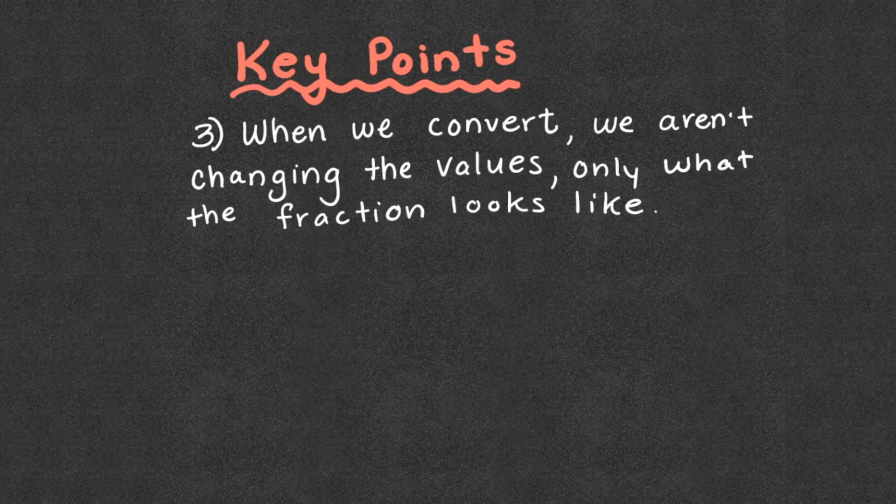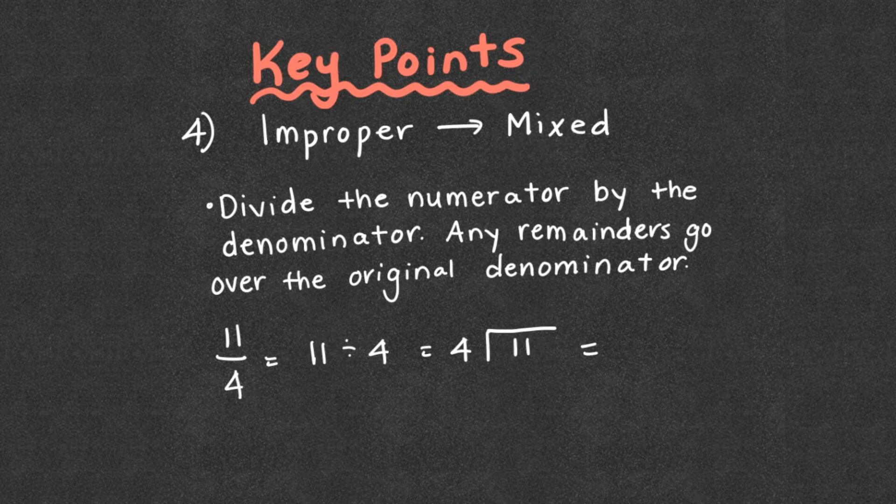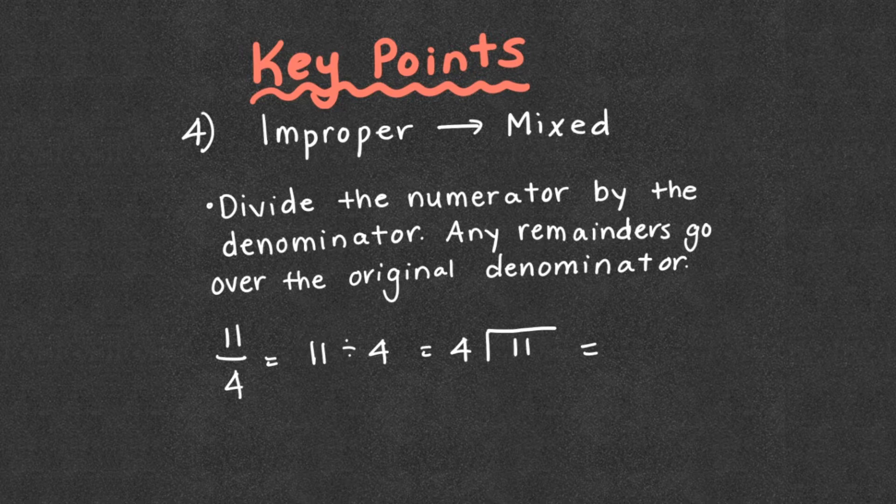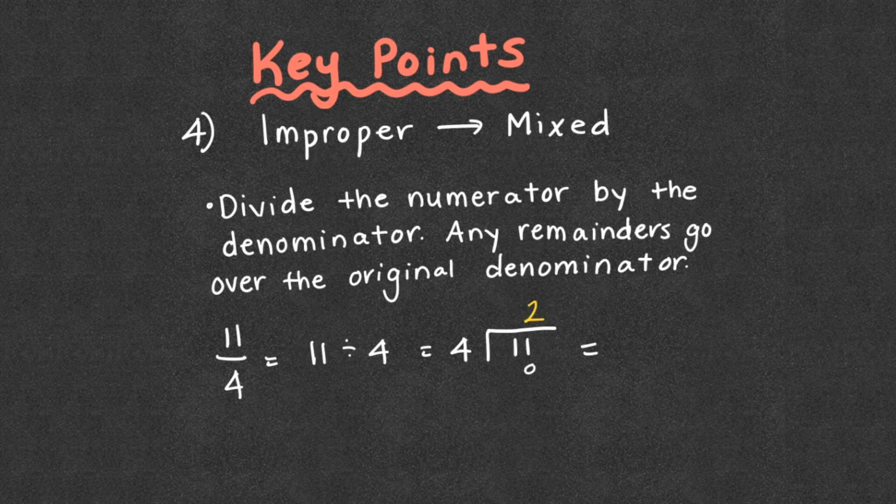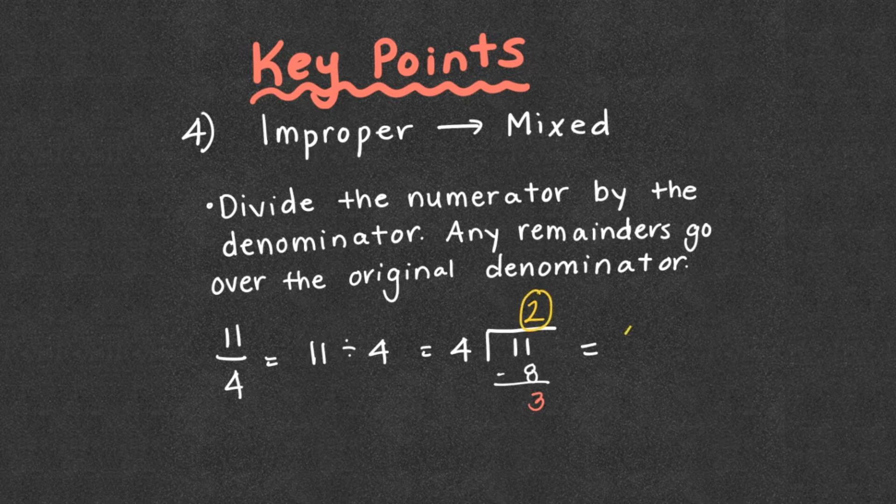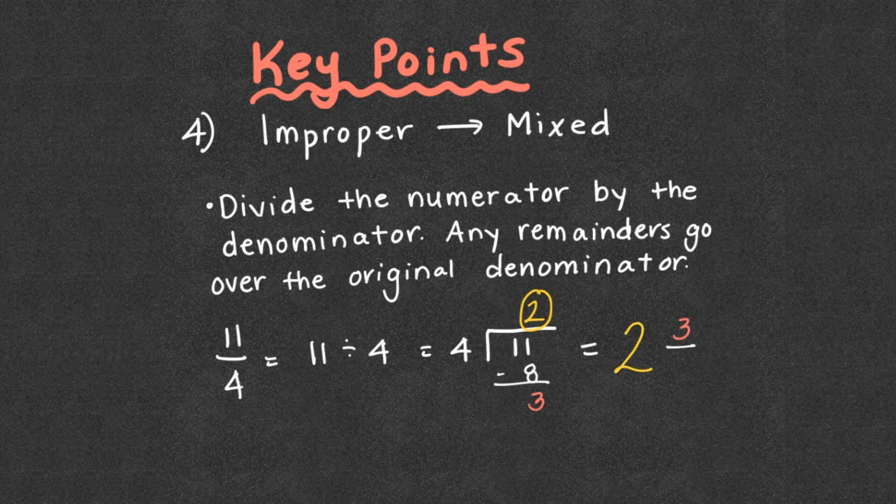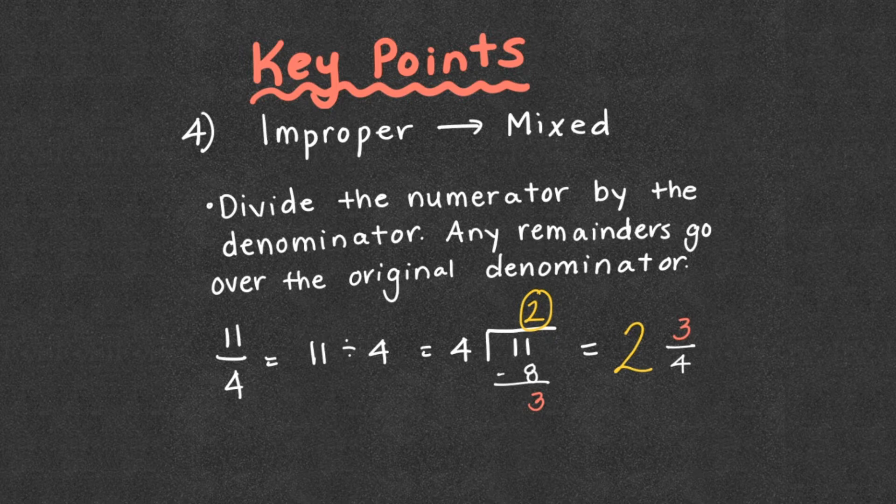Three, when we convert, we aren't changing the values, just what the fractions look like. When we go from improper to mixed, we're going to divide the numerator by the denominator. If we have a remainder, it goes over the original denominator. So let's look what that means. We have 11 divided by 4 is 2. 2 times 4 is 8. We subtract, and we have 3 left over. So if I was going to take my mixed number, it went in 2 whole times. So that's my whole number, 2 whole times. And at the end, we had 3 pieces left out of 4, since we were making groups of 4. So our mixed number would be 2 and 3 fourths.